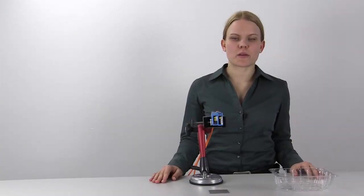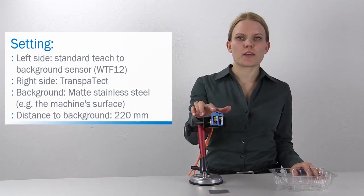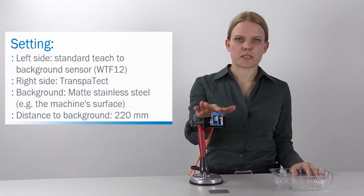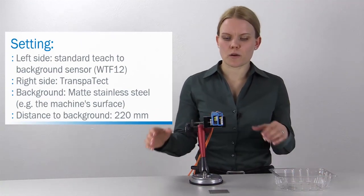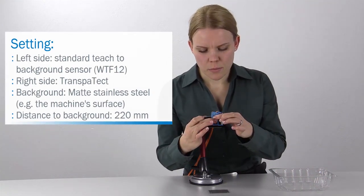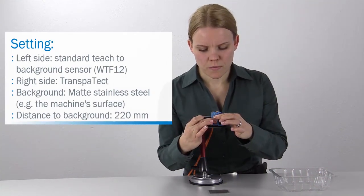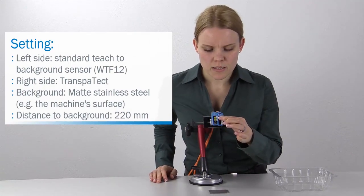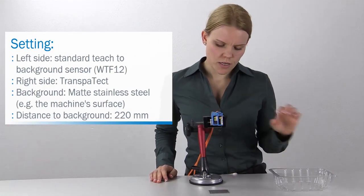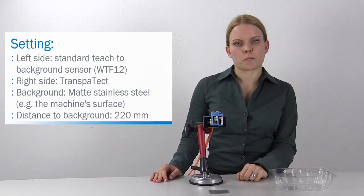In this demonstration we have a normal photo-eye with background suppression next to the new Transpatect. Both sensors I can teach with just the background very easily by pressing the teach button. The background I'm using is a matte stainless steel blade. Just imagine this could be your machine background.